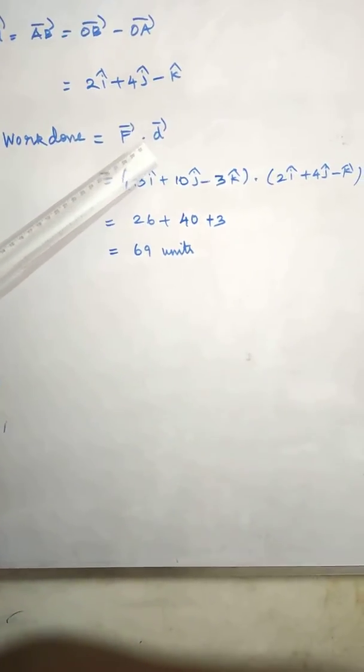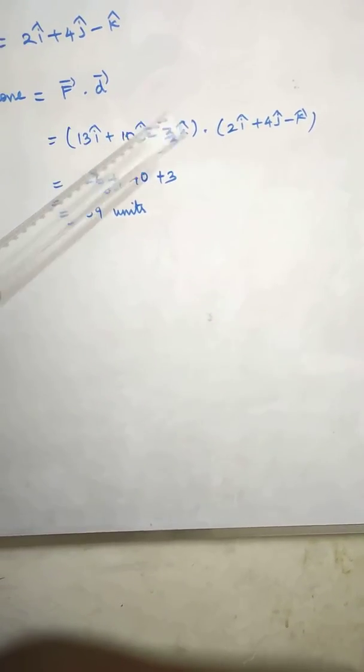Then work done is equal to F vector dot D vector. So let us dot product.